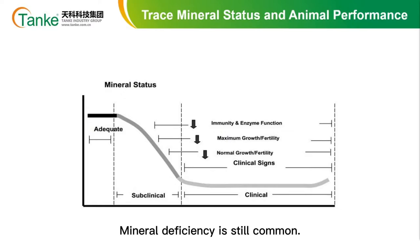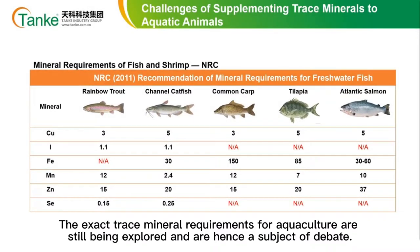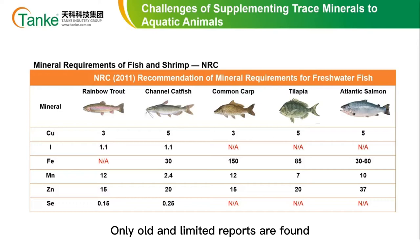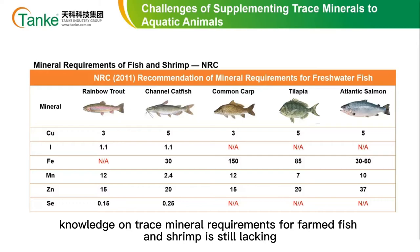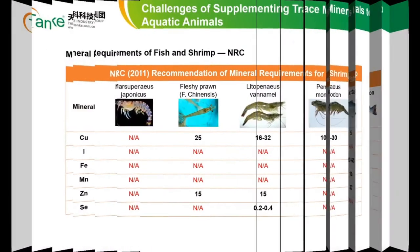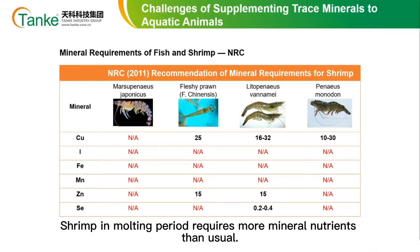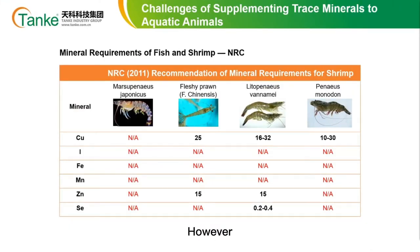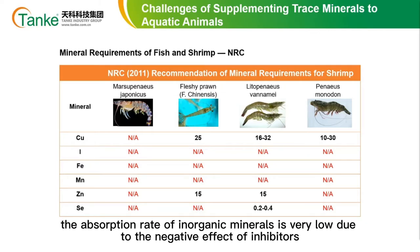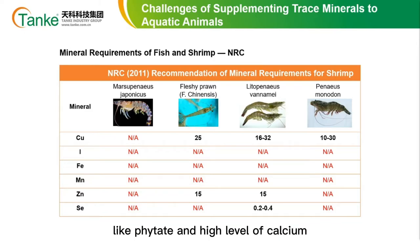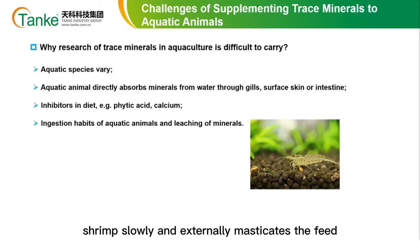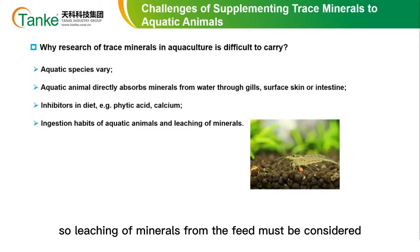However, the application of trace minerals in aquaculture faces many challenges. Mineral deficiency is still common. The exact trace mineral requirements for aquaculture are still being explored and remain a subject of debate — only old and limited reports are found. In NRC 2011, knowledge on trace mineral requirements for farmed fish and shrimp is still lacking. Shrimp in the molting period require more mineral nutrients than usual, but the absorption rate of inorganic minerals is very low due to the negative effect of inhibitors like phytate and high levels of calcium. Besides, shrimp slowly and externally masticate the feed, so leaching of minerals from the feed must be considered.